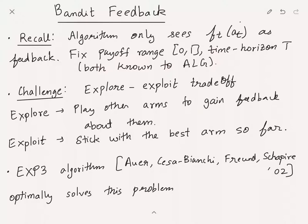What is the additional challenge we have compared to the full feedback setting? The additional challenge here is the explore-exploit trade-off. The algorithm has to explore or play every arm sufficiently to get enough feedback. If it doesn't play an arm, it will never see feedback for it. But on the other hand, it also needs to stick with the best arm it has seen so far — it has to trade off exploration and exploitation at every time step.